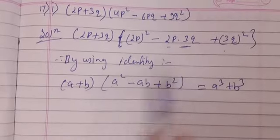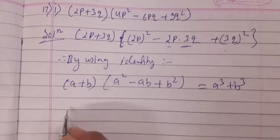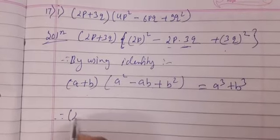First term plus second term, then first term square, then multiplication of first and second term, then second term square. So as it is our equation is there according to identity.